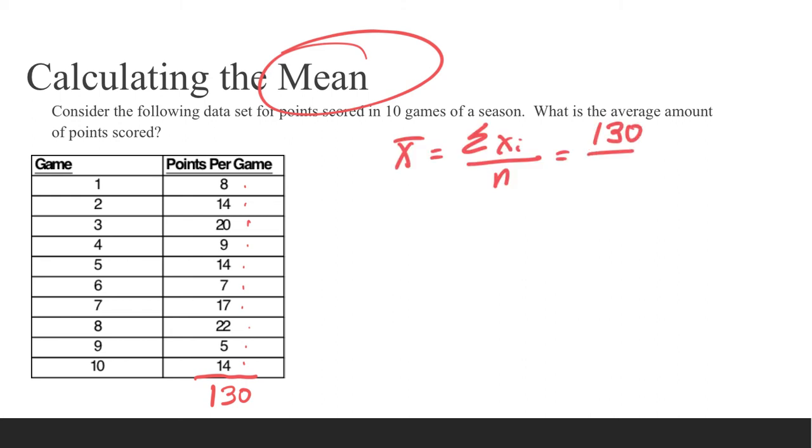So our numerator is 130 and now we're dividing by the total sample here, the total number of games, and that is 10.